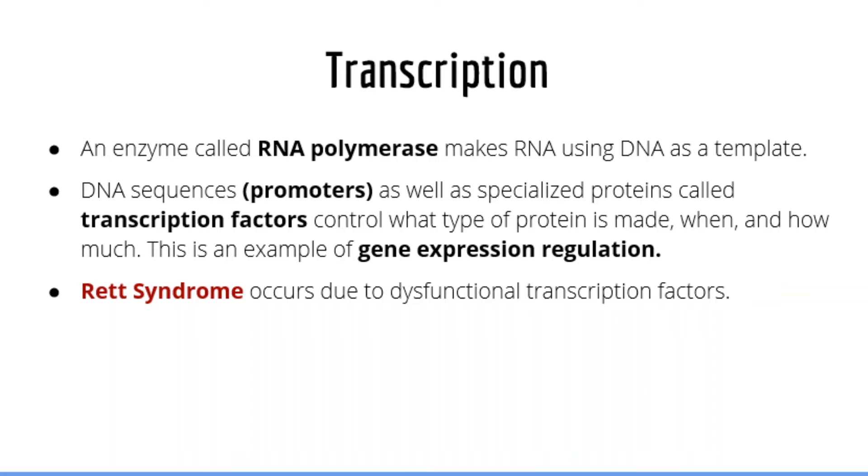Proteins which function to control which parts of the DNA are transcribed are called transcription factors. There is usually a special sequence in the DNA that transcription factors can identify and know which part of the DNA to transcribe. These sequences are known as promoters. Rett syndrome is believed to occur due to mutations in transcription factors. We will talk more about Rett syndrome in later videos.